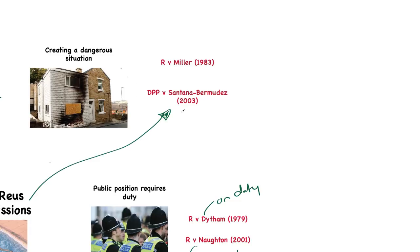The second case is Santana Bermudez. The defendant injured a woman police officer by allowing her to search him, knowing he had a hypodermic needle in his pocket which stabbed her. He denied having any needles when asked. He was convicted by magistrates but acquitted at Crown Court; however, the prosecution's appeal was allowed. The principle was that he had created a danger, exposing another to a reasonably foreseeable risk of injury — providing an evidential basis for the actus reus of assault and actual bodily harm. This is a notable change, as it suggests battery can potentially be committed by omission.